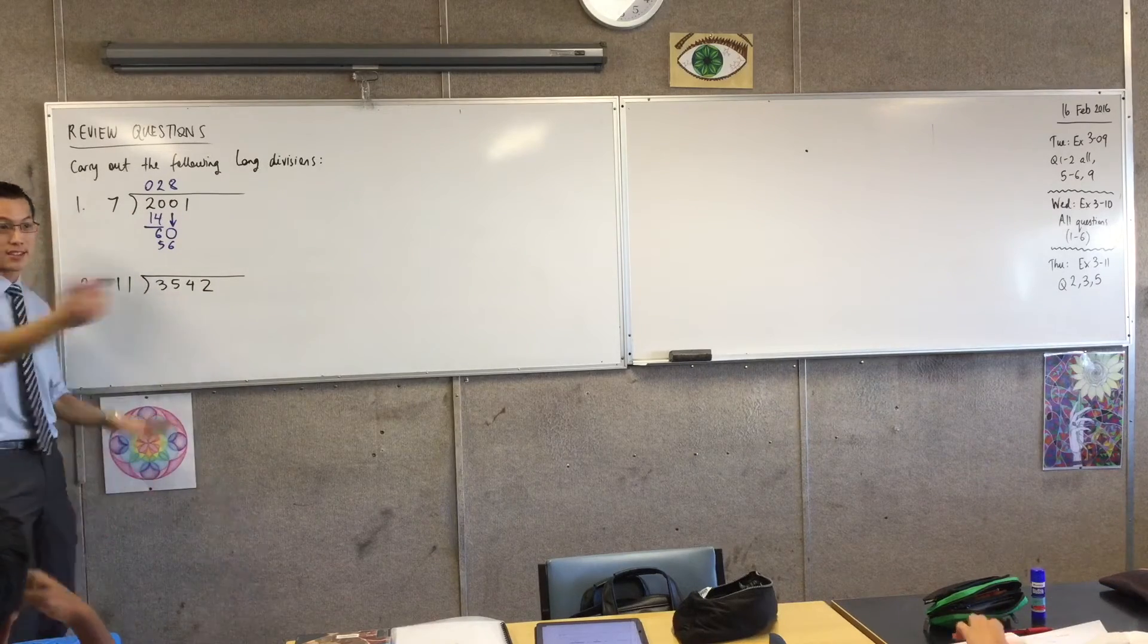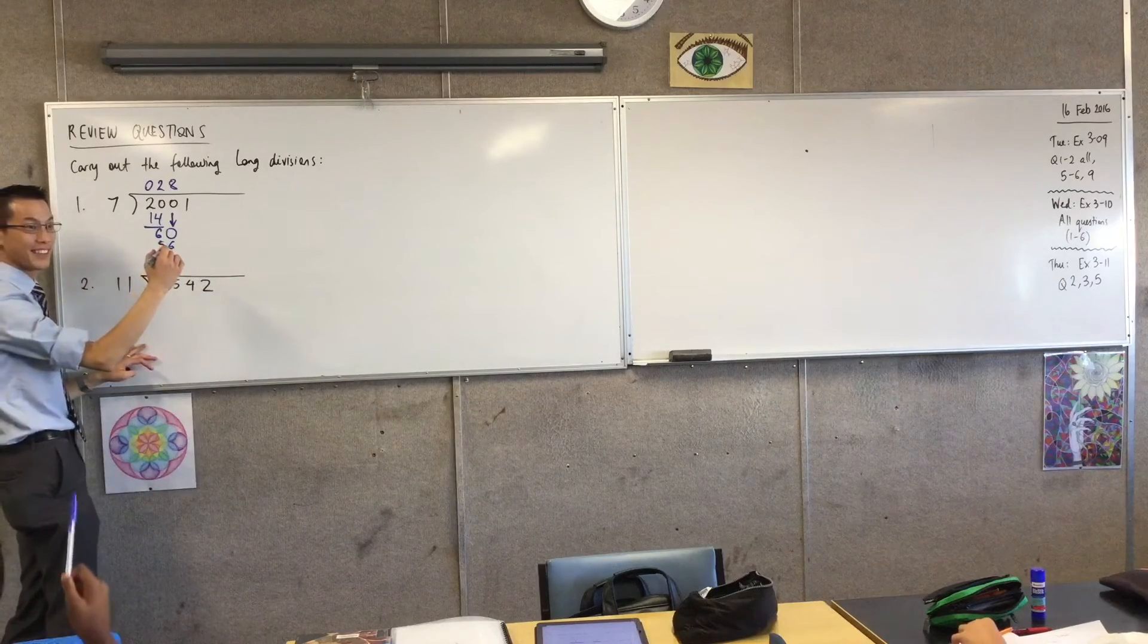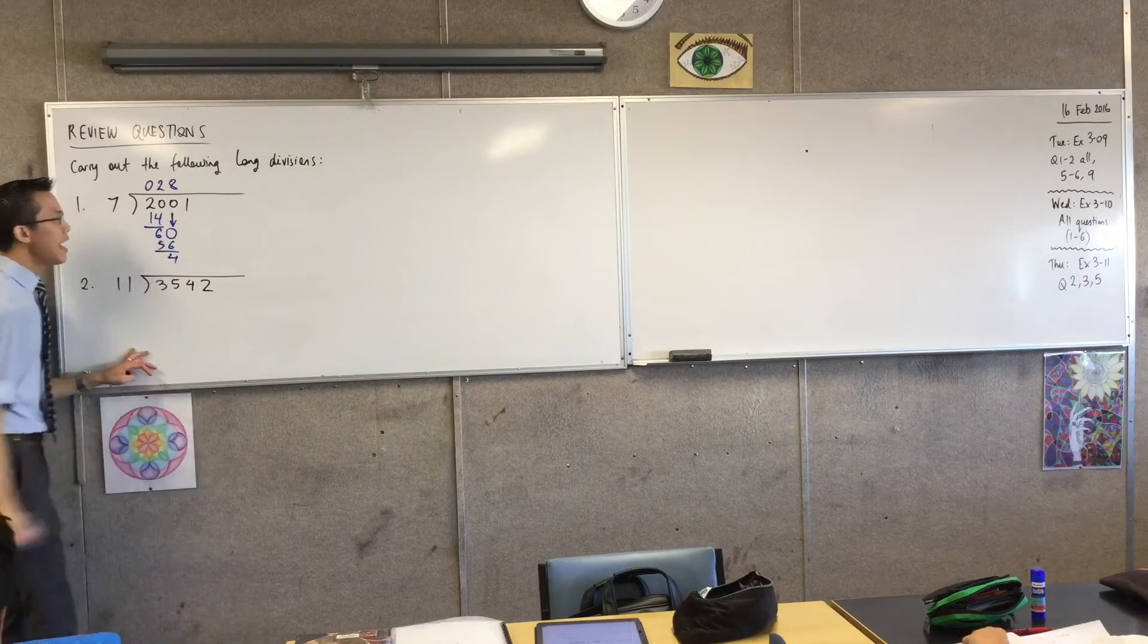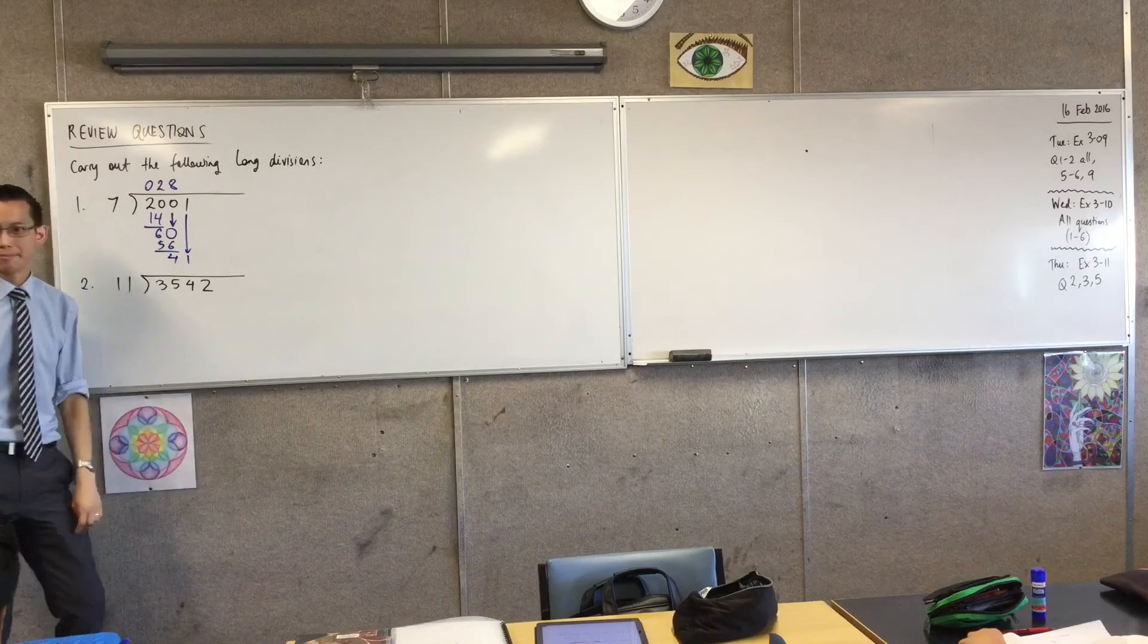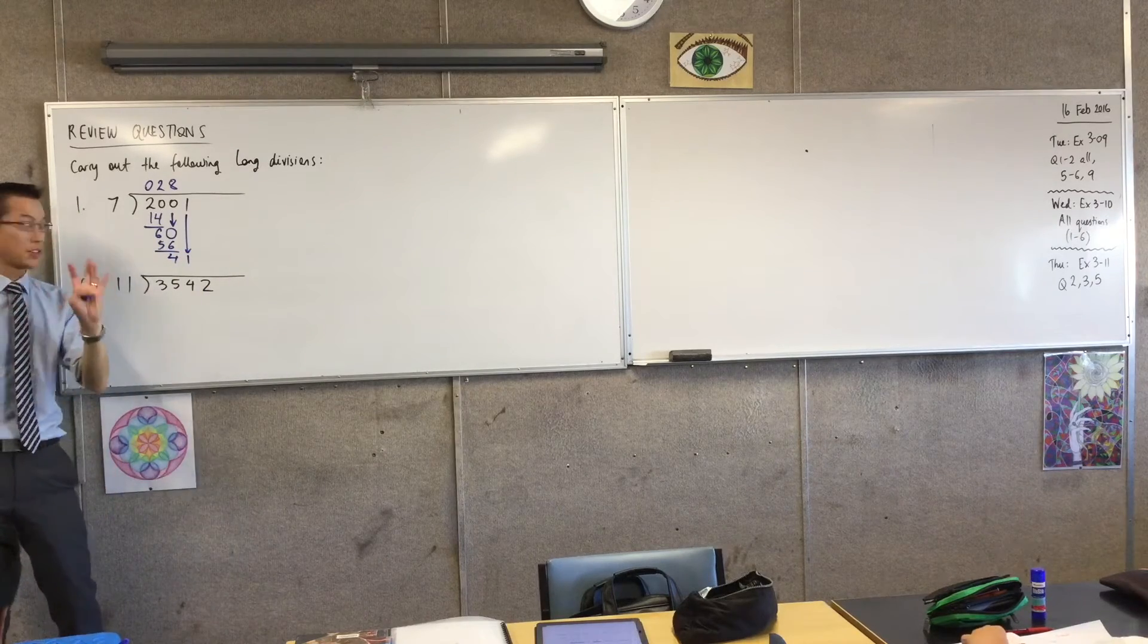60 take away 56 is... is 4. Very good. And of course, I can't fit any 7s in there. So I bring down the last number, which is 1.